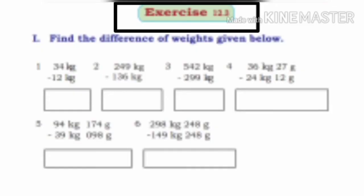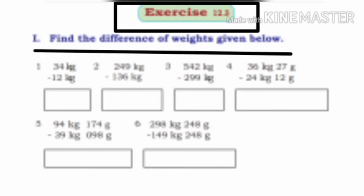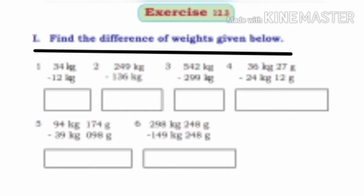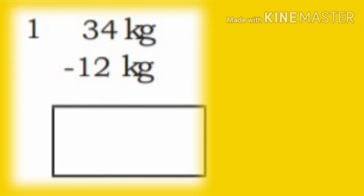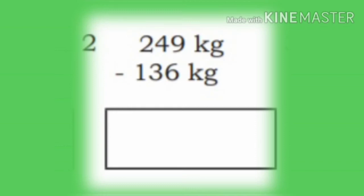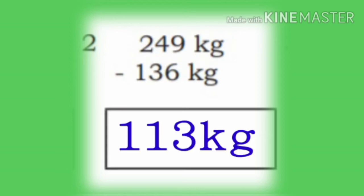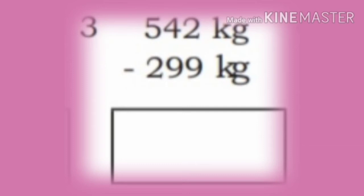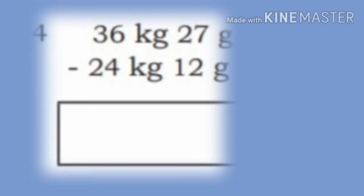Let us solve Exercise 12.3. First, find the difference of the weights given below. First: 34 kg minus 12 kg equals 22 kg. Second: 249 kg minus 136 kg equals 113 kg. Third: 542 kg minus 299 kg equals 243 kg. Fourth: 36 kg 27 g minus 24 kg 12 g.